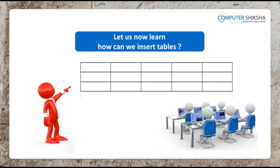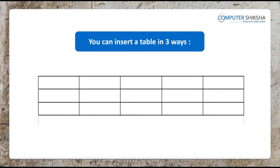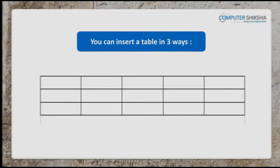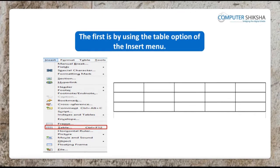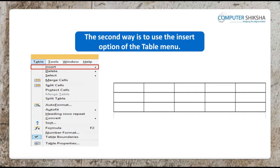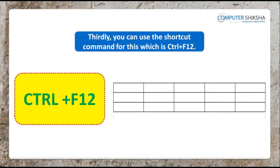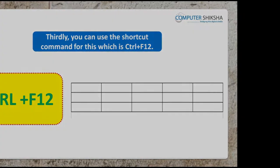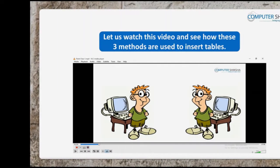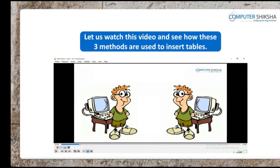Let us now learn how we can insert tables. You can insert a table in three ways. The first is by using the table option of the Insert menu. The second way is to use the insert option of the Table menu. Thirdly, you can use the shortcut command for this, which is Ctrl plus F12. Let us watch this video and see how these three methods are used to insert tables.